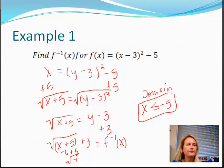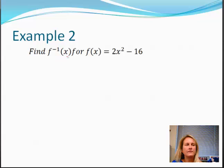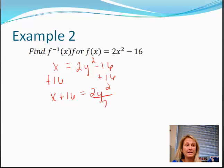Next example. Find the inverse of x for f of x is equal to 2x squared minus 16. So let's switch things around. x now equals 2y squared minus 16. We need to add 16 over here.